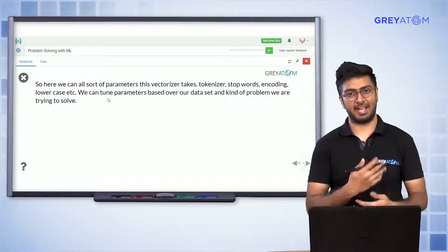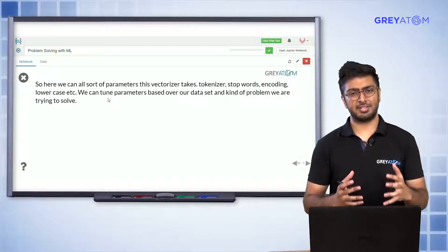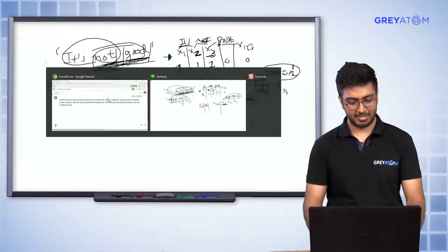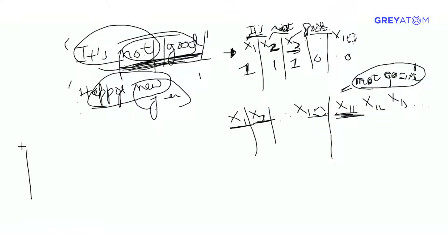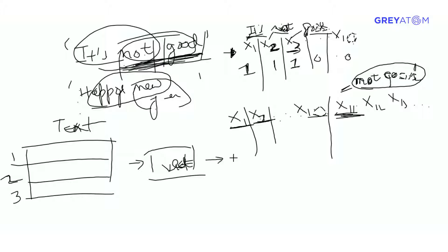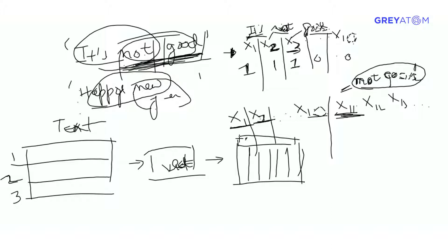One important thing to note is that all the things we discussed — lemmatization, stemming, and so on — relate to what the vectorizer takes as input. The vectorizer takes raw text as input, in the form of rows. You feed that unclean text into the vectorizer, and it gives you output in the form of features — count vector features. These include all unique words in the text document, plus bigram features if you're using bigrams, along with the corresponding representation for each row.